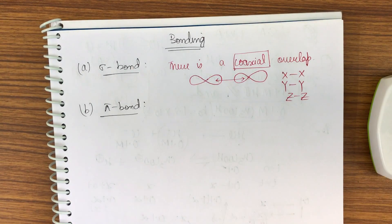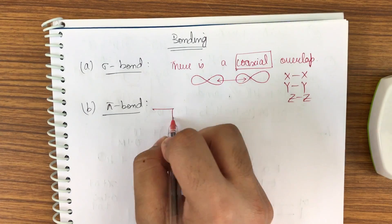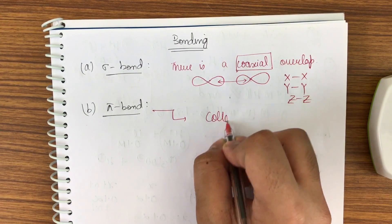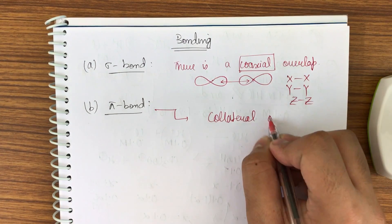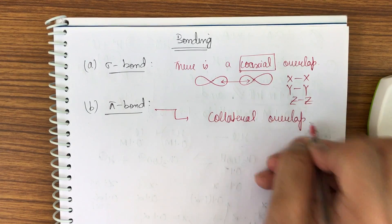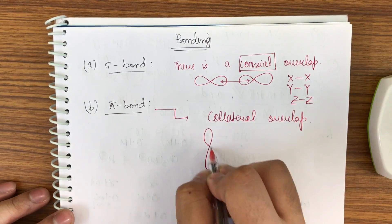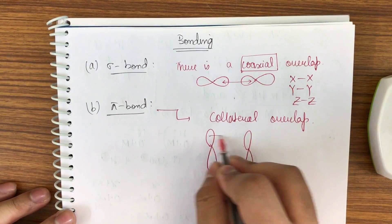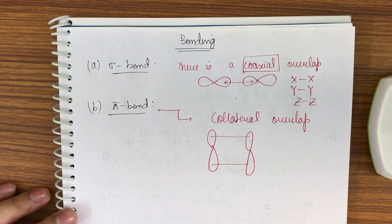And the pi bond - there is collateral overlap, like this. It has to be in this way.